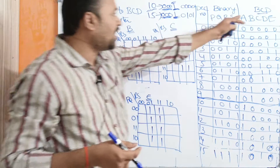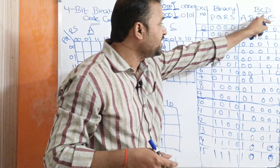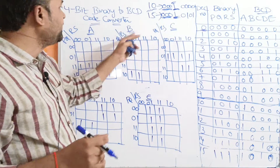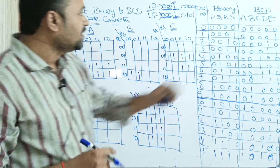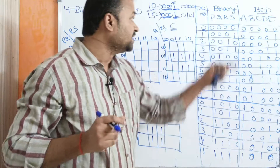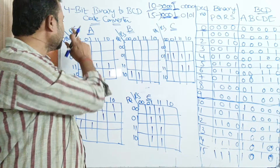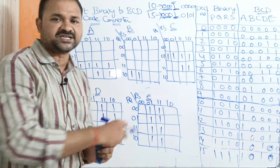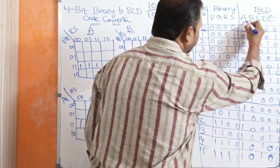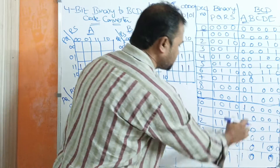Now let us simplify for output bits A, B, C, D, and E. Here we have 4 inputs and 5 outputs. Since we have 4 inputs, a 4-variable Karnaugh map is enough. We have 4 variables P, Q, R, S — with PQ on the left-hand side and RS on the right-hand side, with combinations 00, 01, 11, 10. If we observe the first column A, we have six 1s.